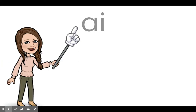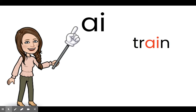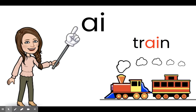We can create the long A sound with the letters A-I. You hear this sound in the word train — it's in the center of the word train: T, R, A, I, N. A and I work together to help produce the long A sound in train. That's one word pattern for A: A-I.